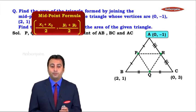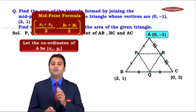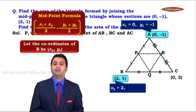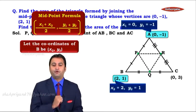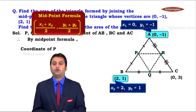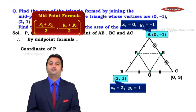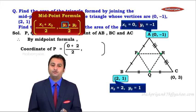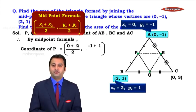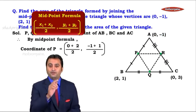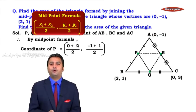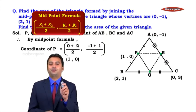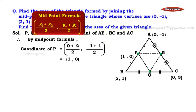Let's start with the calculation for point P. Since P is the midpoint of segment AB, A coordinates are x1, y1 and B coordinates are x2, y2. Therefore, by midpoint formula, P = (0 + 2)/2, (-1 + 1)/2. That gives us: 2/2 = 1, and (-1 + 1)/2 = 0. So coordinates of P are (1, 0).